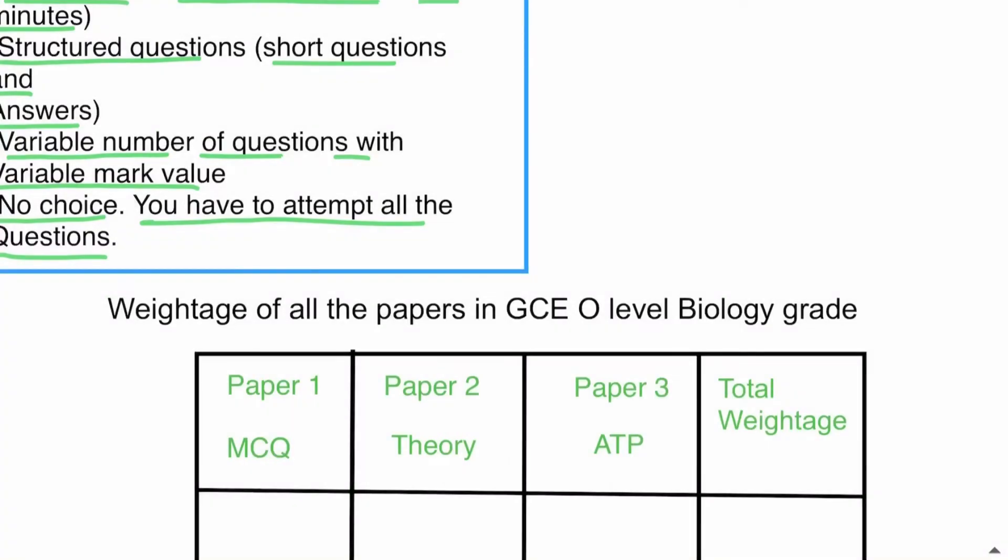For example, if you're getting an A or any grade, each paper has some weightage in that grade. What is the weightage of Paper 1 in the total grade?